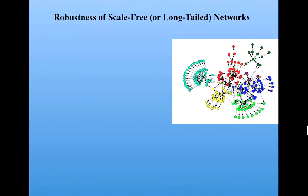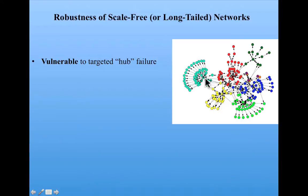The long-tailed degree distribution structure of real-world complex networks has implications for their robustness. Since these networks are largely structured around hubs, they're vulnerable to targeted hub failure.